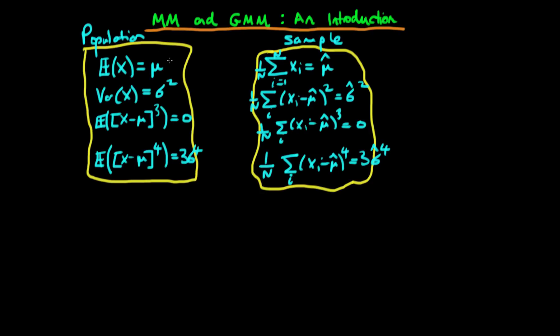What we do is for each of these population moment conditions we form the sample analogue, which is essentially just using the sample mean whenever we see the expectations operator.